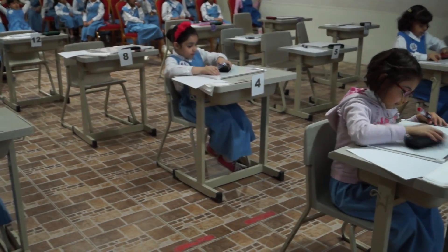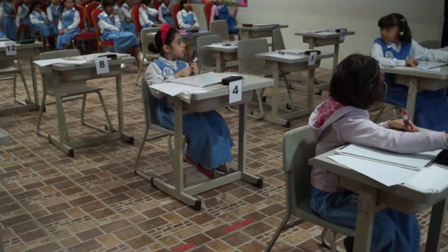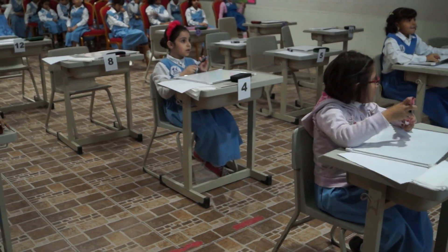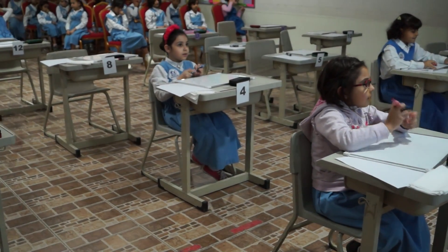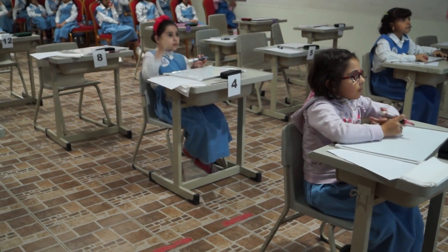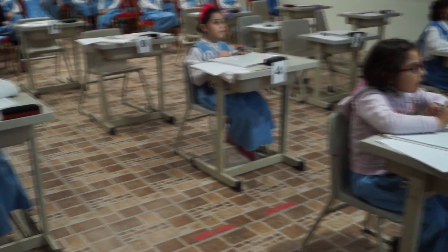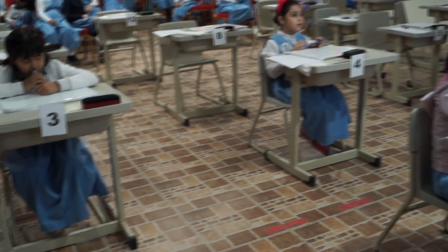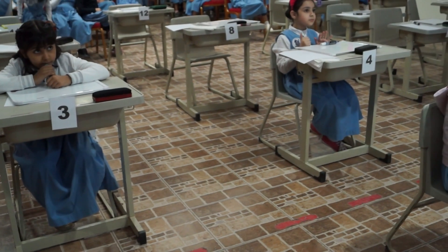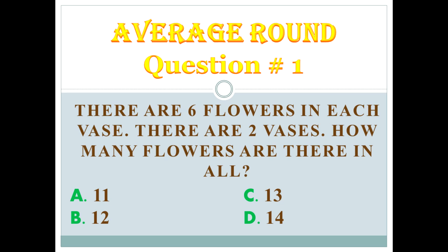Let's move on. Average 1. Question number 1. There are 6 flowers in each vase. There are 2 vases. How many flowers are there in all? Again, there are 6 flowers in each vase. There are 2 vases. How many flowers are there in all?